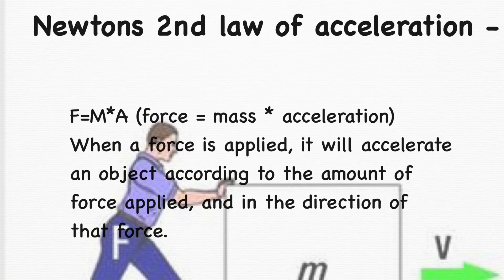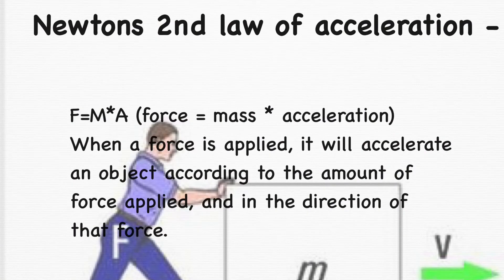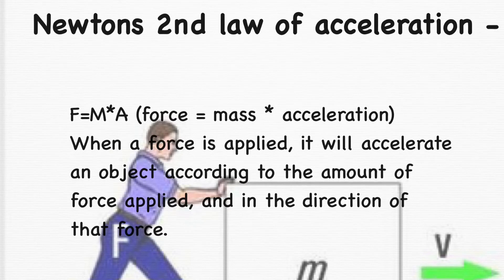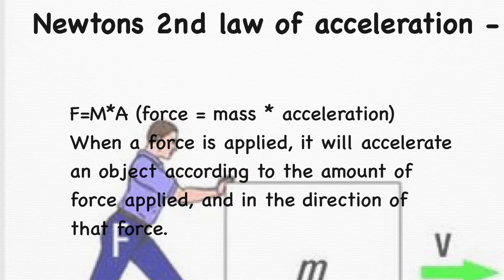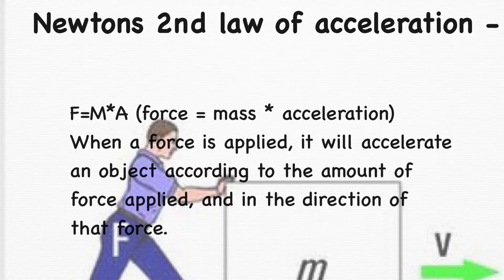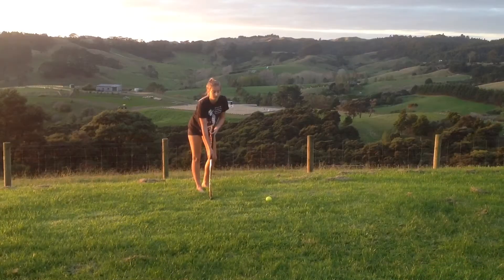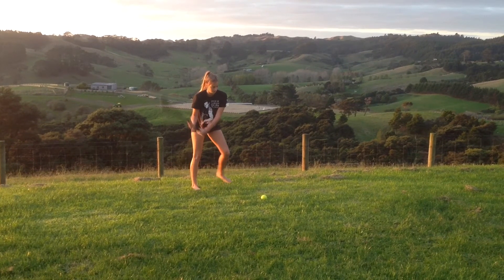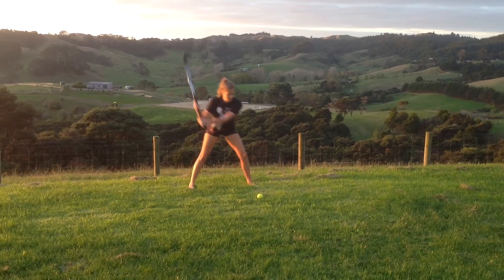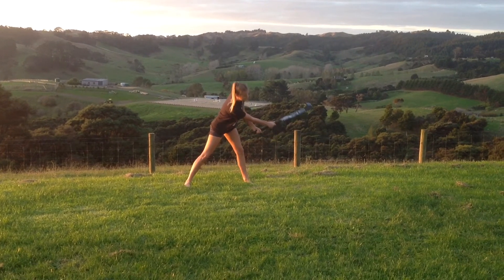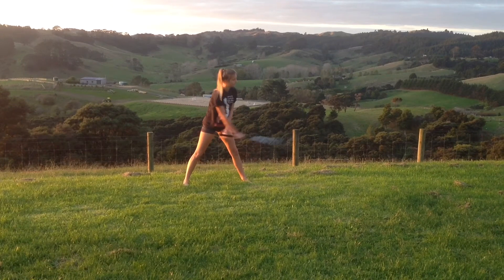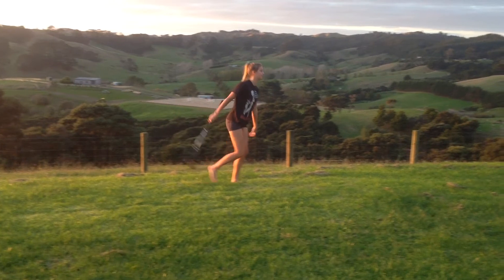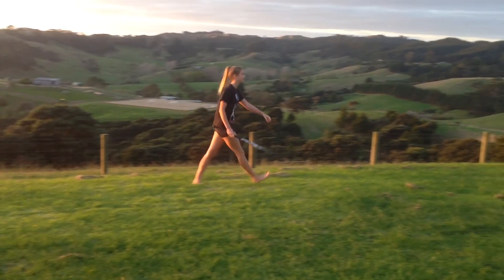Newton's second law, the law of acceleration. Force is equal to mass times acceleration. When a force is applied, it will accelerate an object according to the amount of force applied and in the direction of that force. In hockey, Newton's second law of acceleration is applied when you aim to hit the ball over a far distance. To do this, you must apply a strong amount of force, which causes the ball to accelerate at great speed. If you were to make the ball heavier, it would require much more force in order to make it accelerate forward.